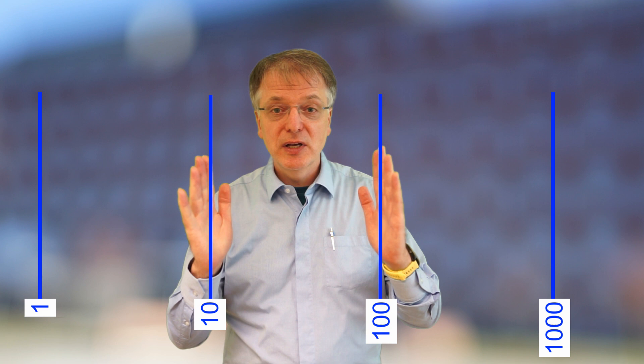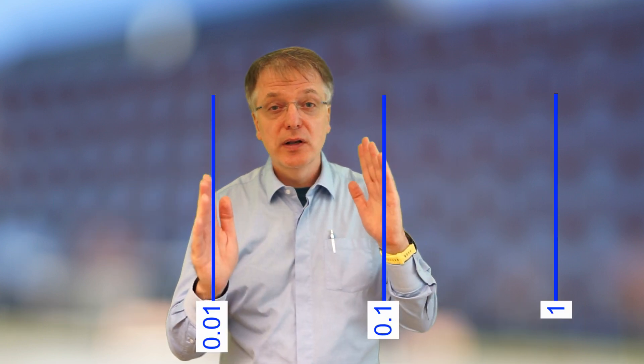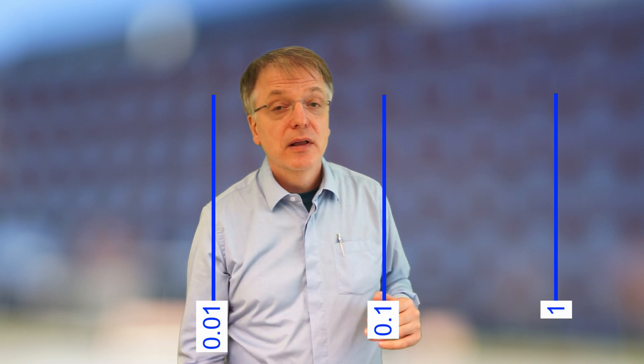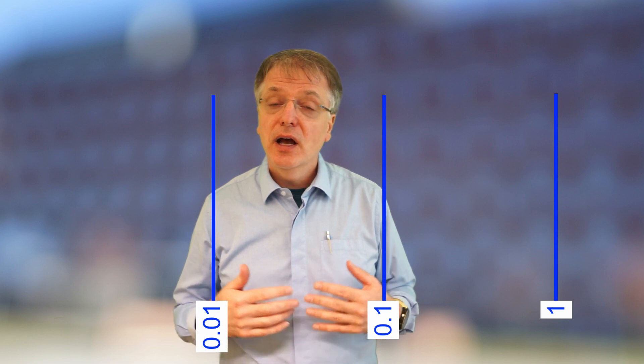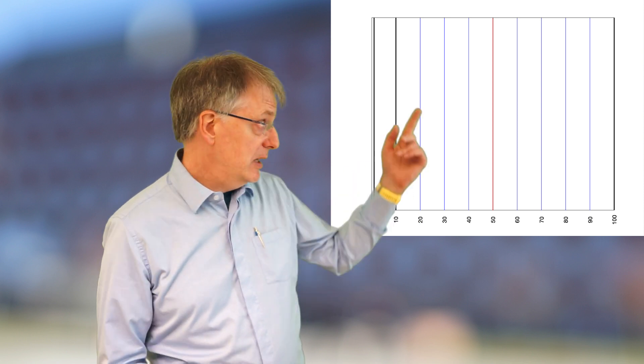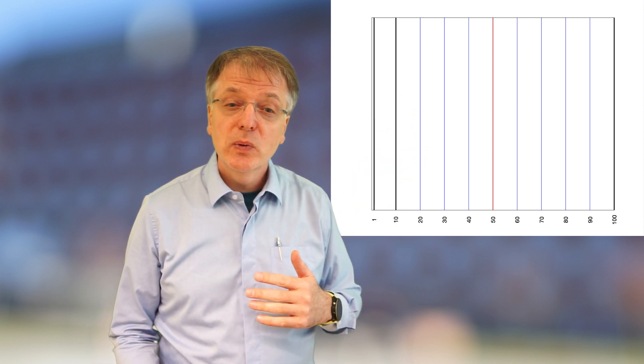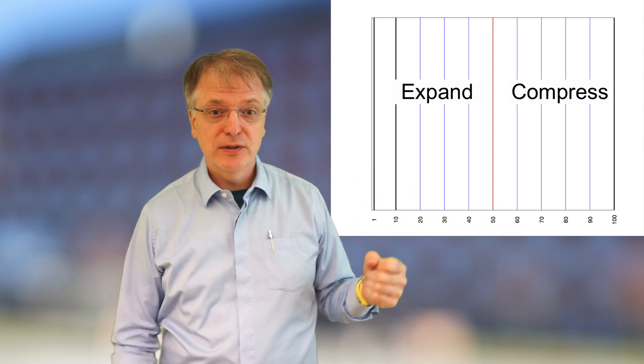In a logarithm with base 10, which is a base often used in diagrams, the distance between 10 and 100 is the same as between 100 and 1000 and the same as between 0.01 and 0.1. This means that there is no zero on the logarithmic scale and no negative numbers. If we want to transform this linear scale to logarithmic scale while keeping 50 in the middle, we need to compress everything above 50 and expand everything below 50.